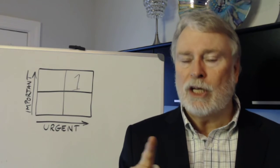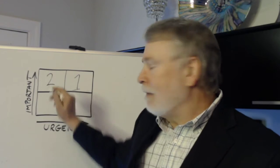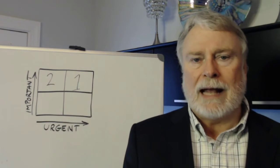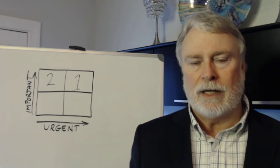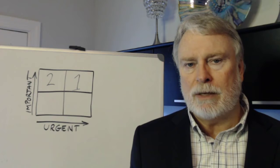Next, the things that are important, meaning you have to do them, but they're not very urgent. That's category two. You want to schedule those things, put them out on your calendar, either later in the week or next week. They're important so you have to do them, but they're not that urgent. They don't have to be done immediately.